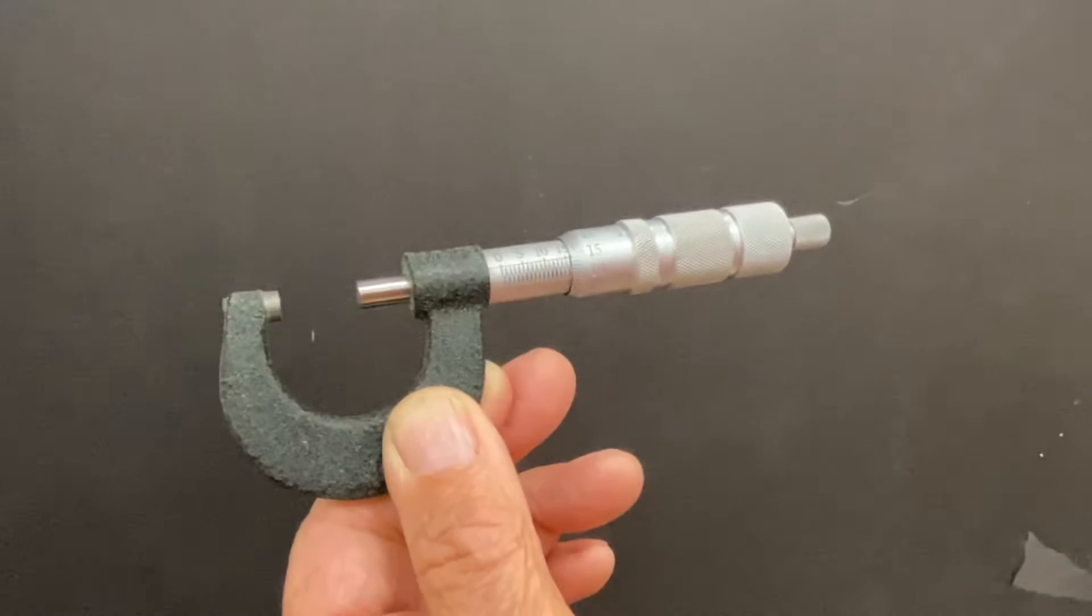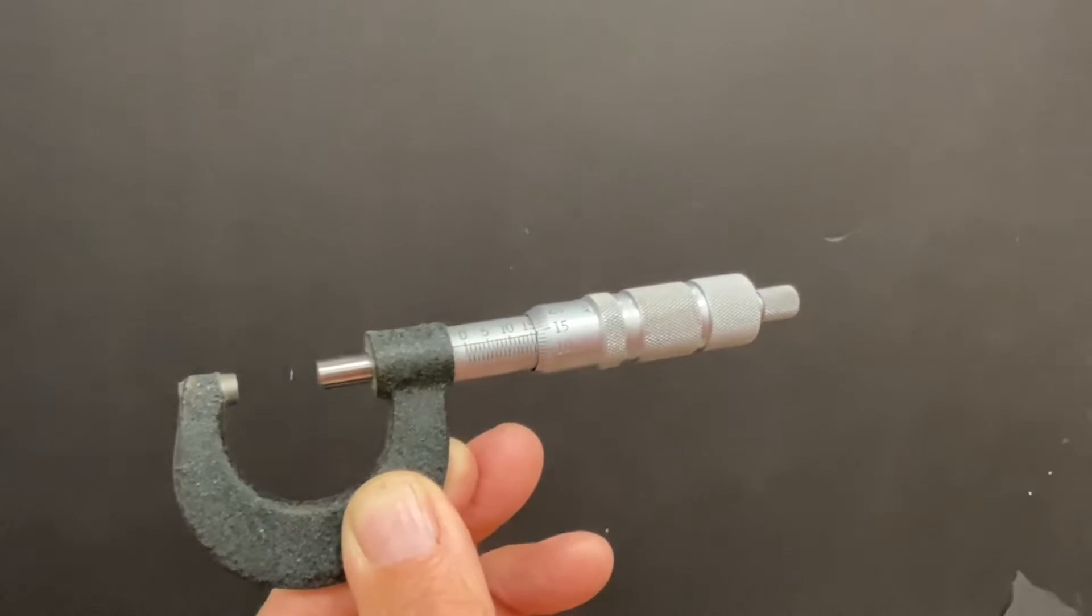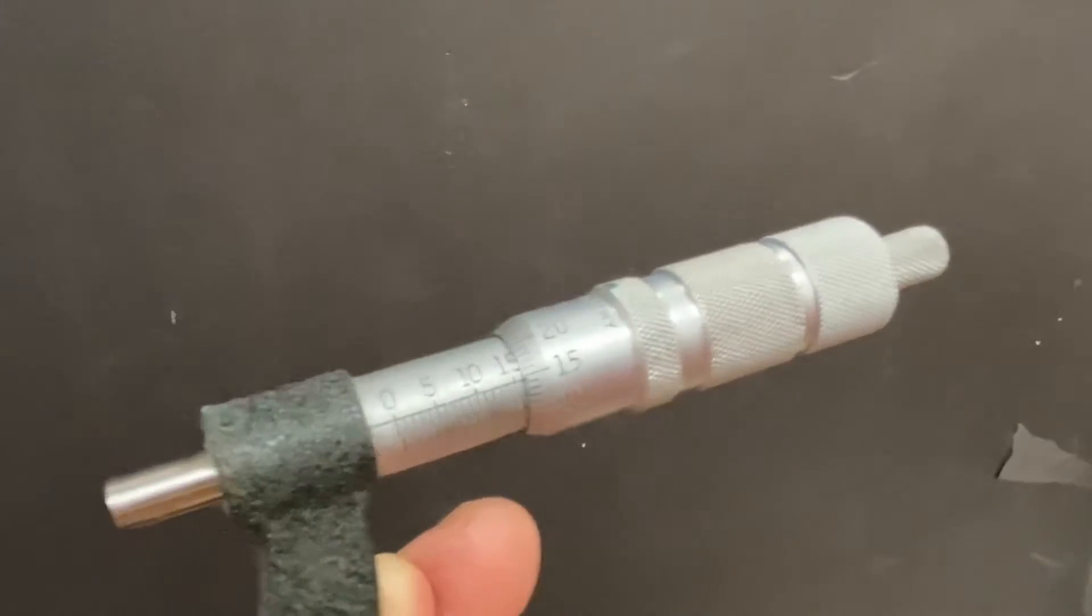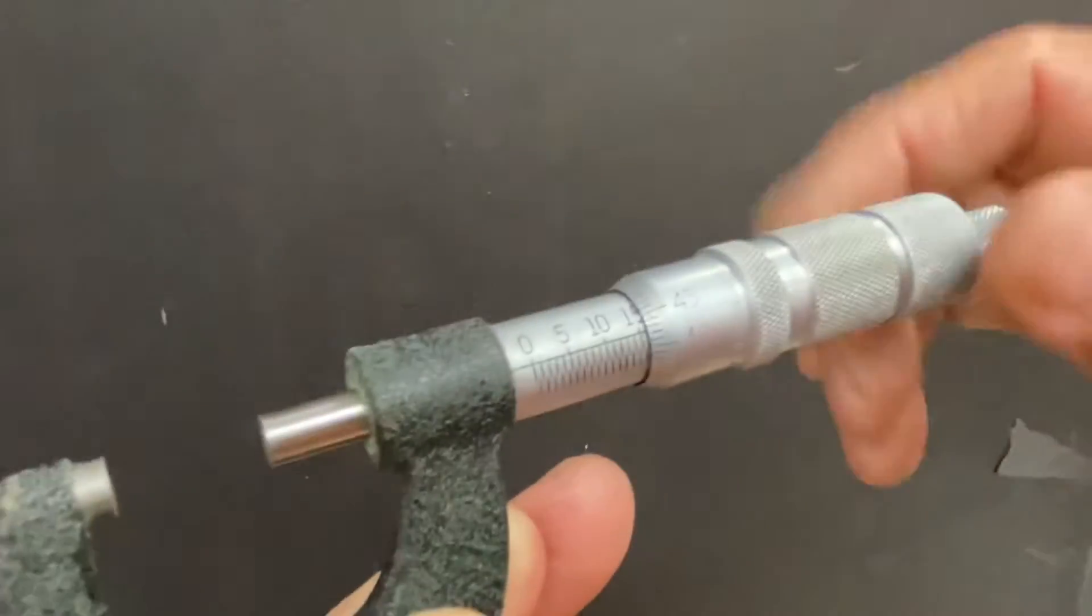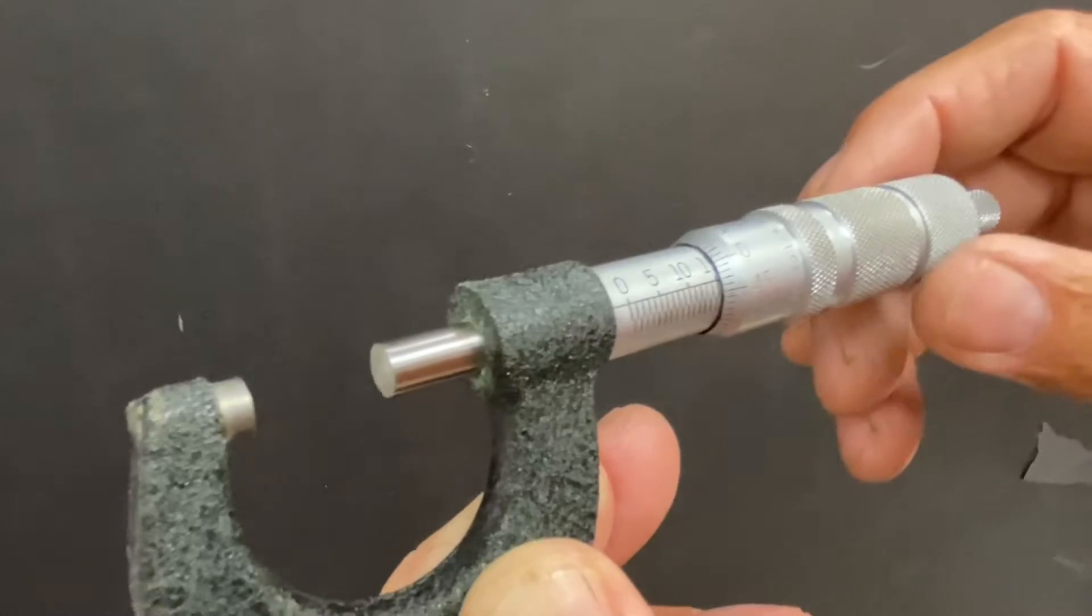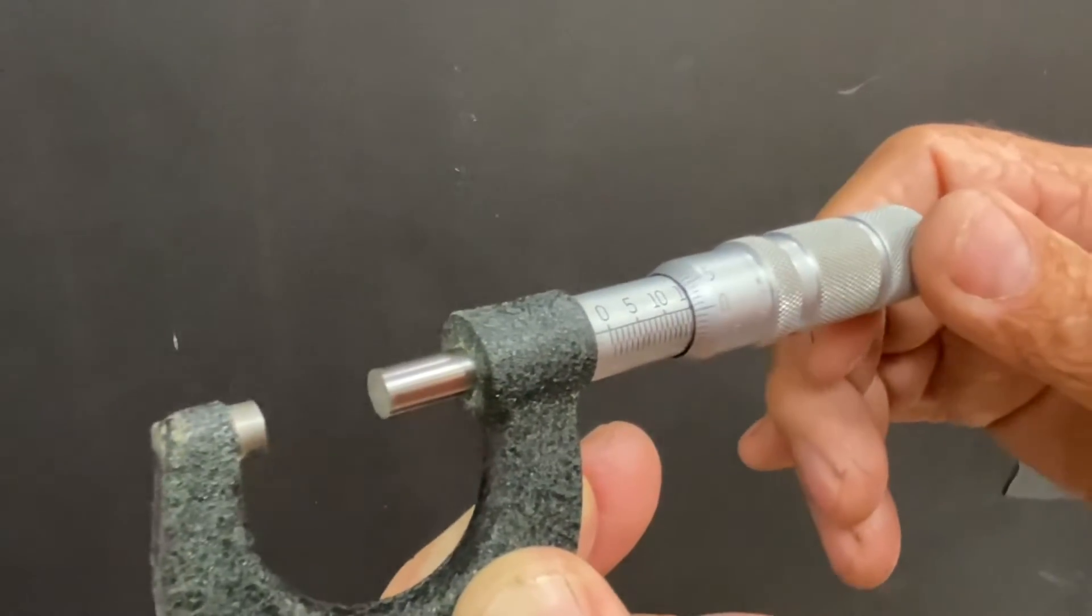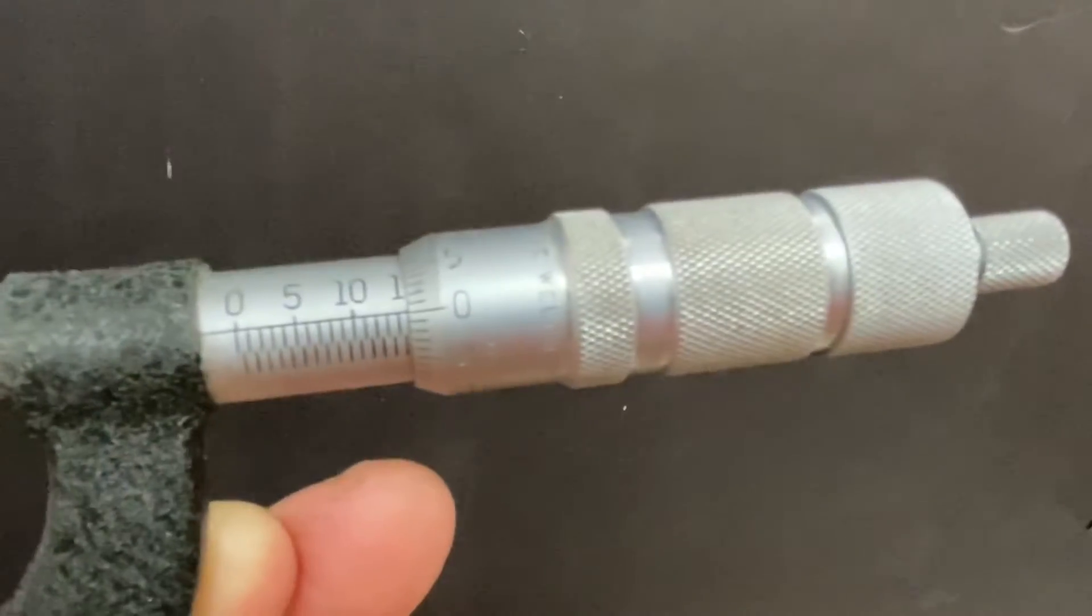Here we have a micrometer, a very precise measuring device that goes to one hundredths of a millimeter. So Mark here will show us what 15.0 millimeters look like. He's opening up the jaws to match up to make that 15.00 millimeters. Okay, that's what it looks like.